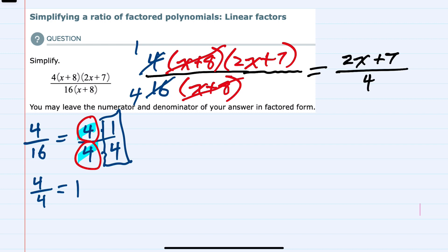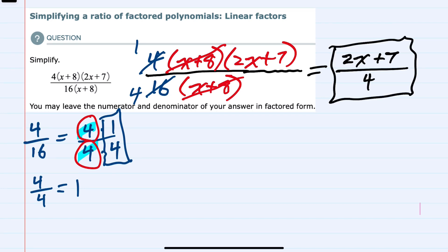So for example, if I could factor out a 2 from the top, then I would be able to cancel. But since I can't factor out a 2, this is in simplified form. Our solution is 2x plus 7 over 4.